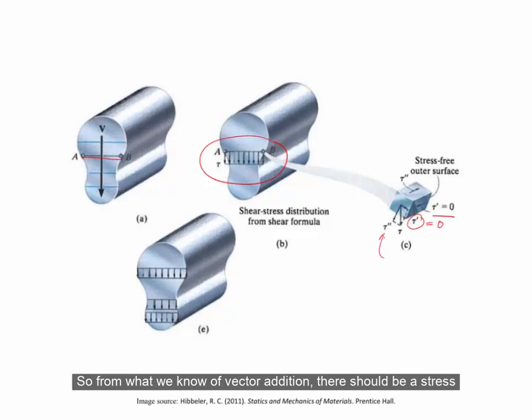From what we know of vector addition, there should be a stress component tau double prime, which is parallel to the boundary, which adds with tau prime to make a downwards pointing tau.